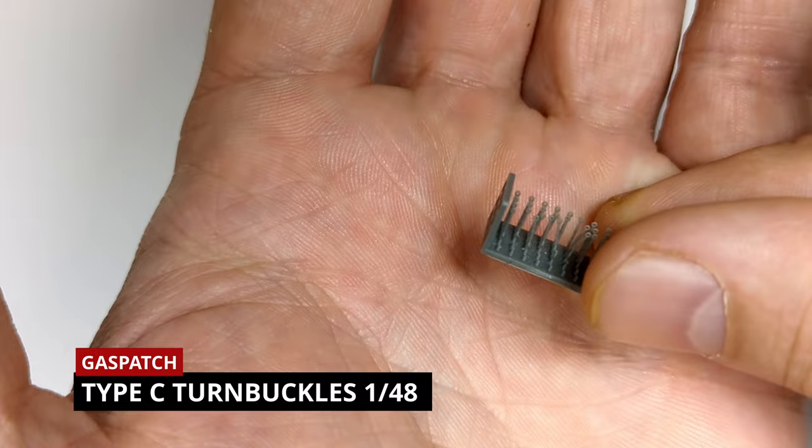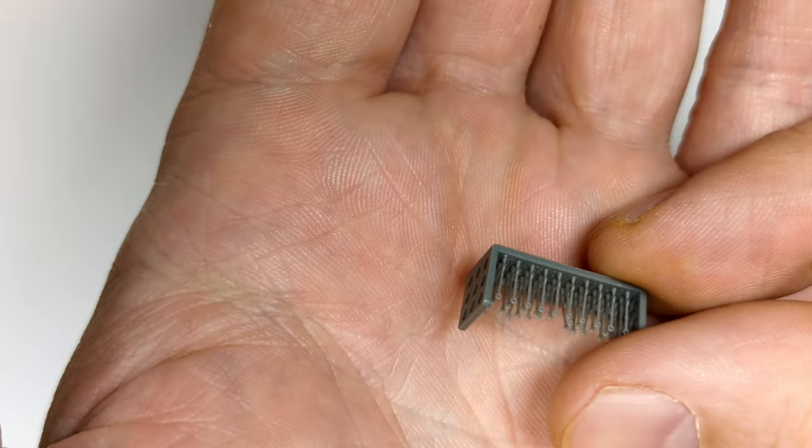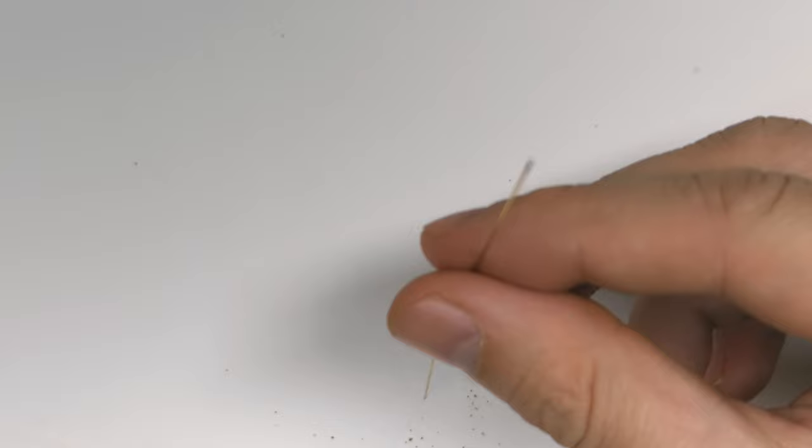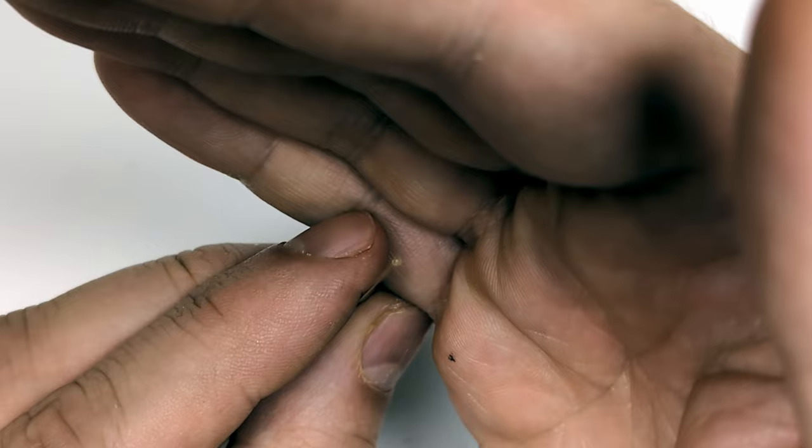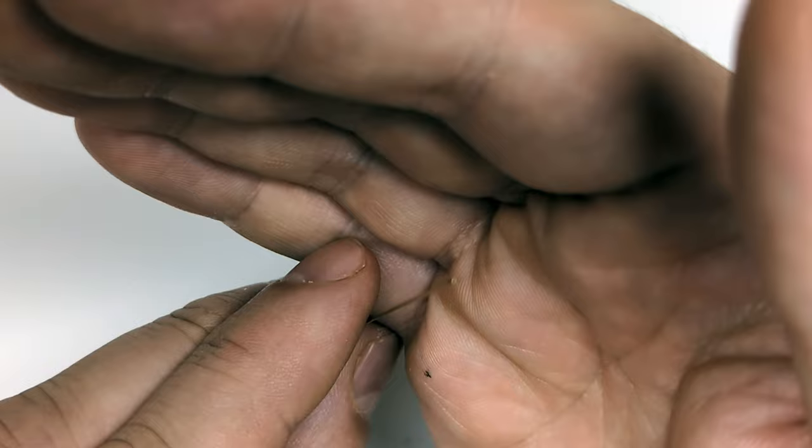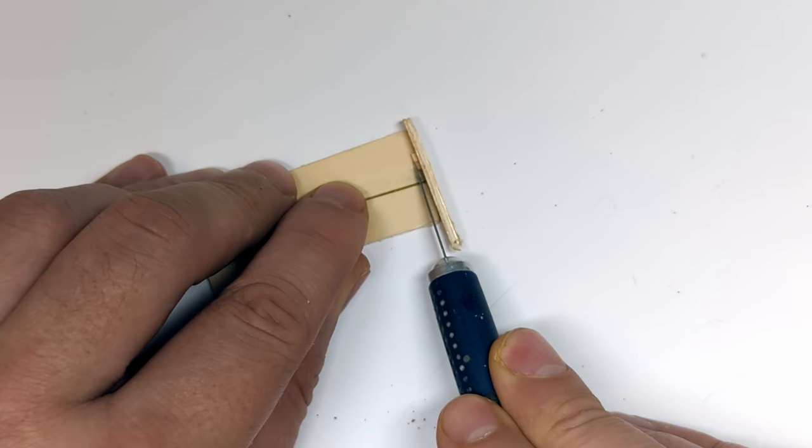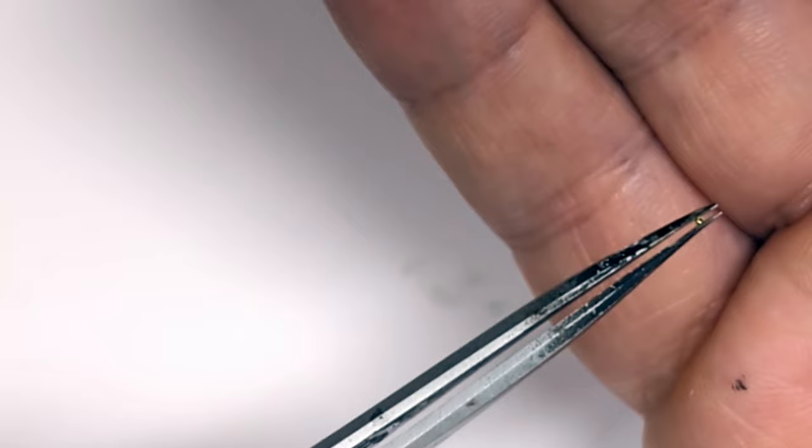I'm using resin turnbuckles from Gaspatch in 1:48 scale. I found the 1:33 one slightly too big and off-scale, at least for the interior rigging where usually smaller turnbuckles were used. Another rigging must-have are brass tubes. We'll have to squeeze a 0.1 millimeter fishing line twice through them, so I took the tubes with 0.3 millimeter diameter. While 0.2 would be enough in theory, it simply doesn't work in reality. Believe me, I tried. With the help of my super professional template here, I cut small sections from the tube.